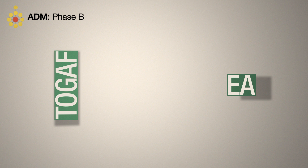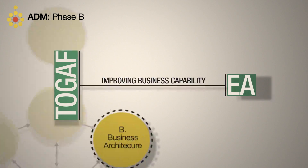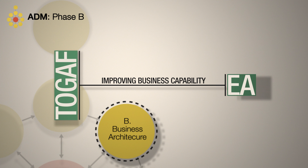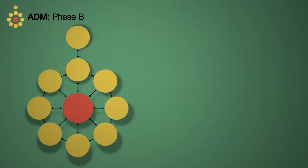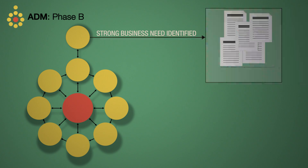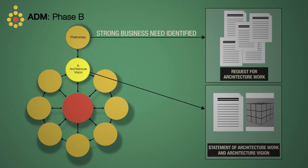TOGAF approaches enterprise architecture as a way of improving business capability, which is why the first architecture development phase deals with business architecture. The ADM starts from a business perspective, with a strong business need identified in the request for architectural work in the preliminary phase, and further refined into a statement of architecture work and architecture vision in phase A.